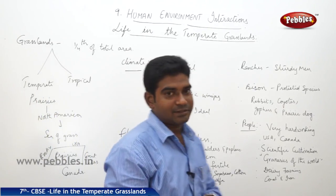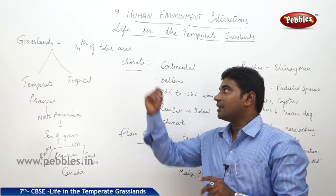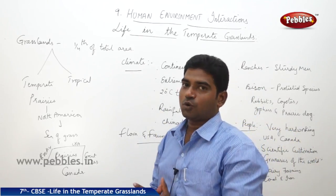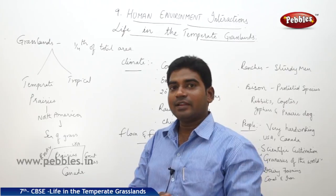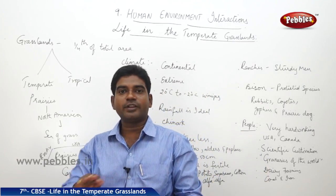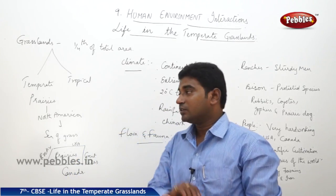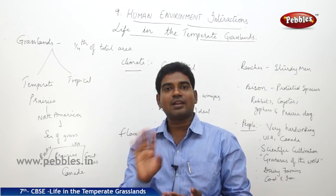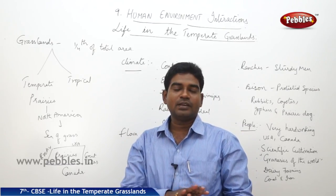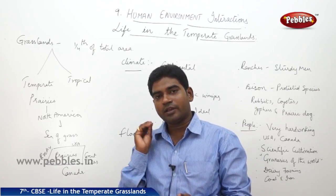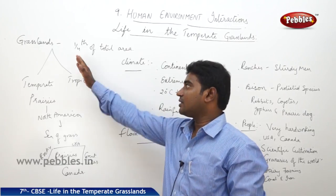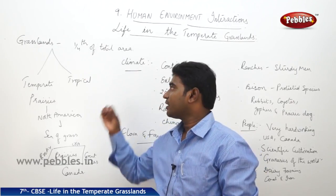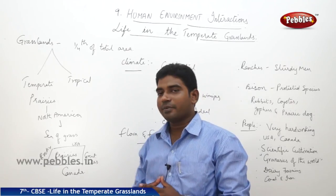What are grasslands? The grasslands are the lands where only grass is grown. There are no trees, only grass is grown on the land. The entire field has only grass grown. These grasslands can be broadly divided into temperate grasslands and tropical grasslands.